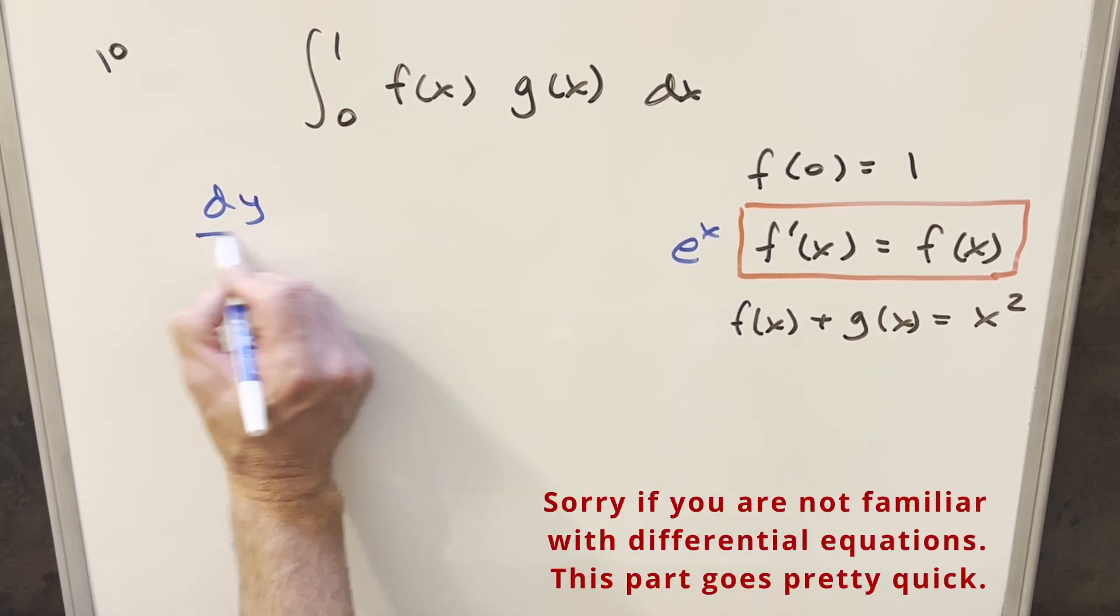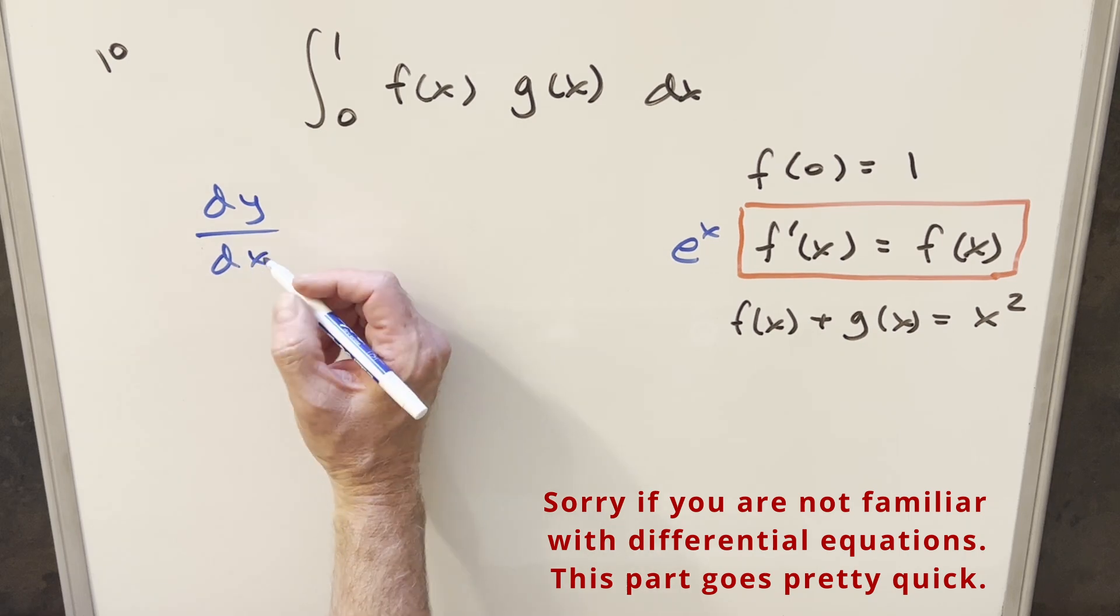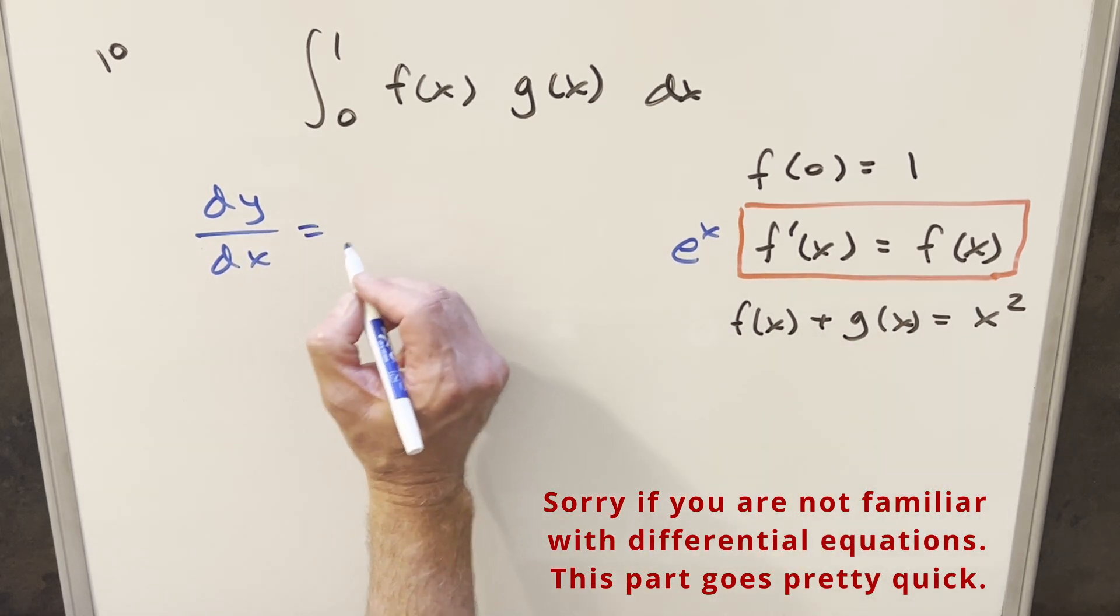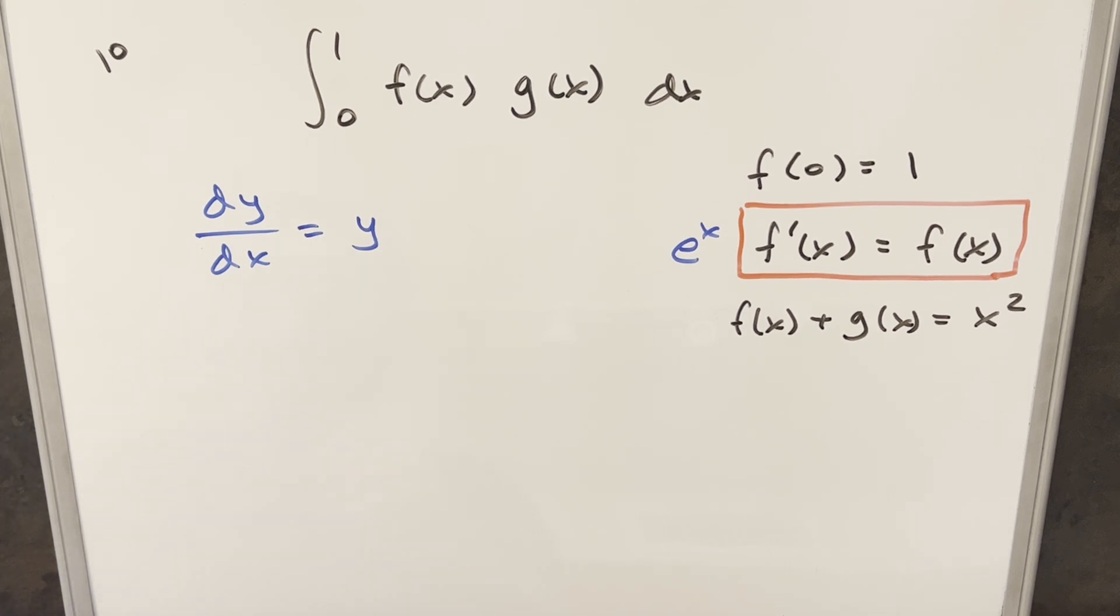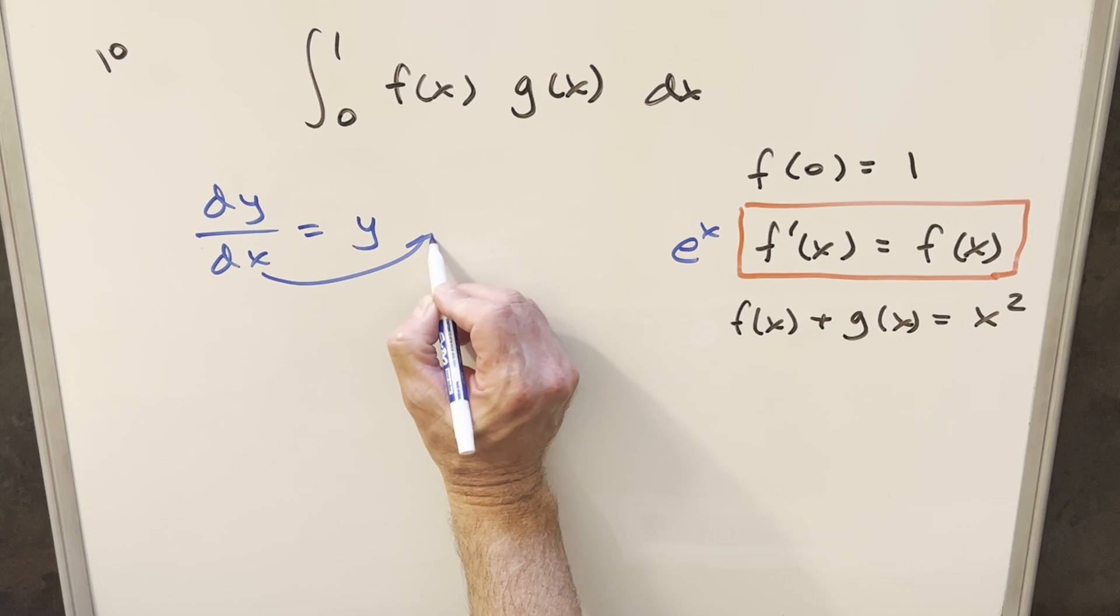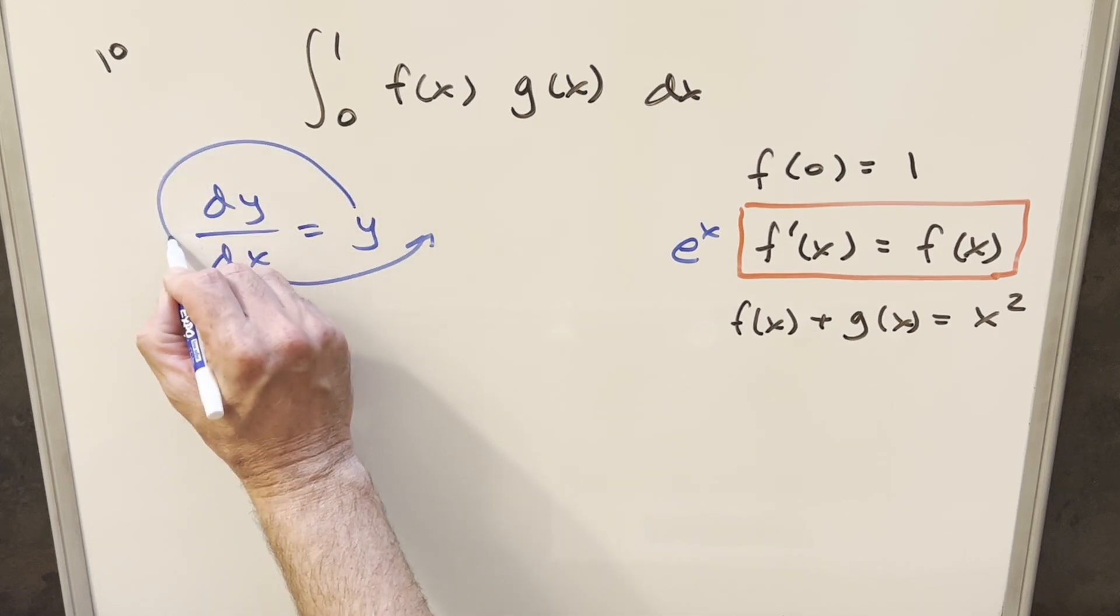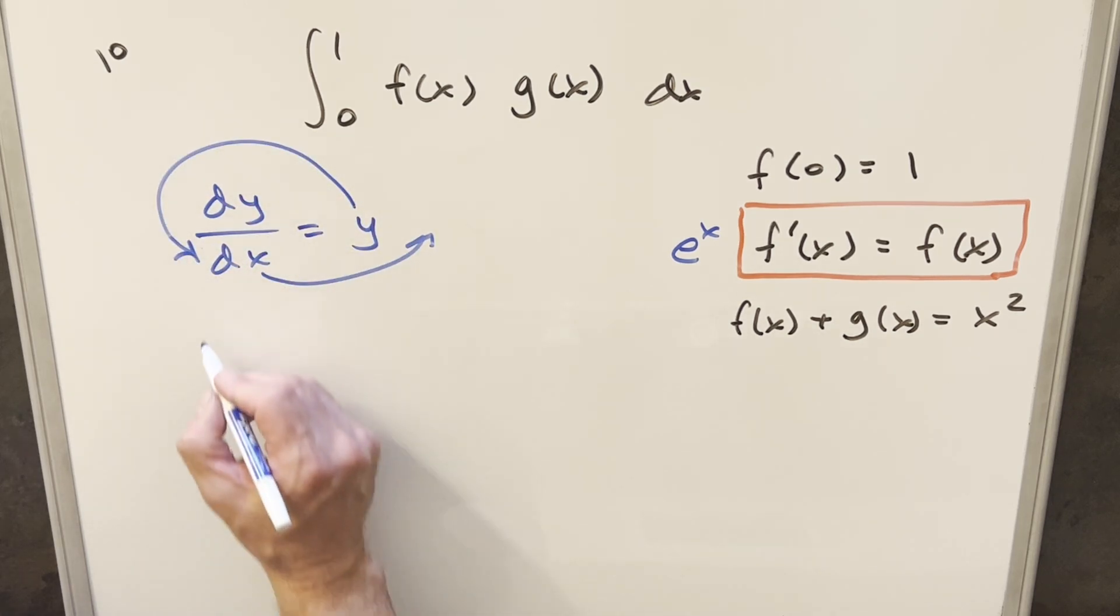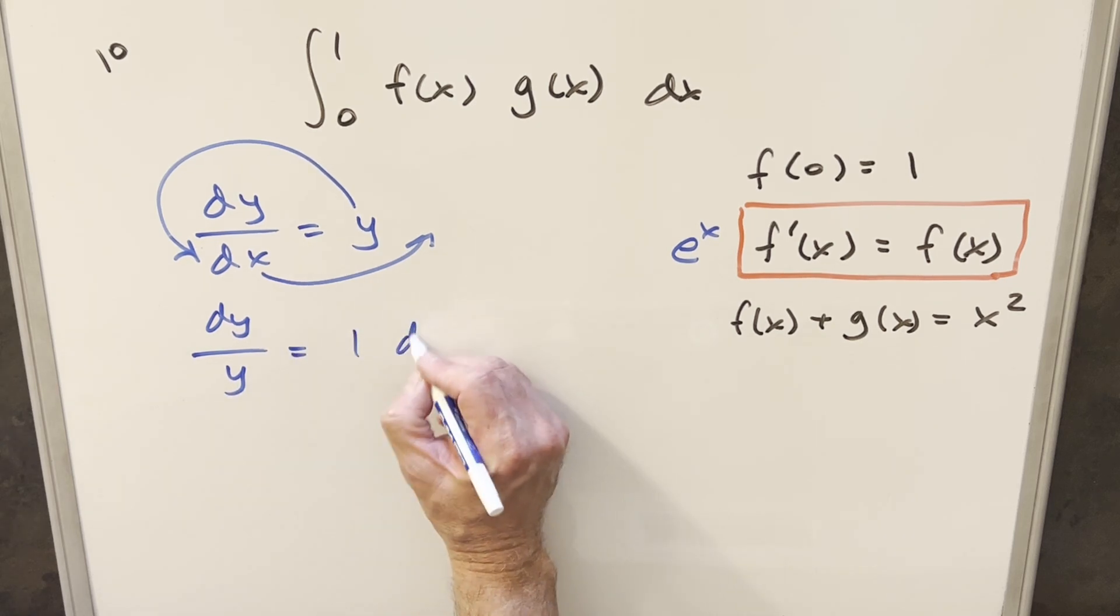So for f prime of x, I'm going to write it like this, dy dx. And for f of x, I'm going to write this as just y. And then so what we have here is really like the simplest differential equation in the world. It's separable. And then what we can do is bring the dx over here, bring the y back over here in the denominator. We write this as dy over y equals just 1 times dx.